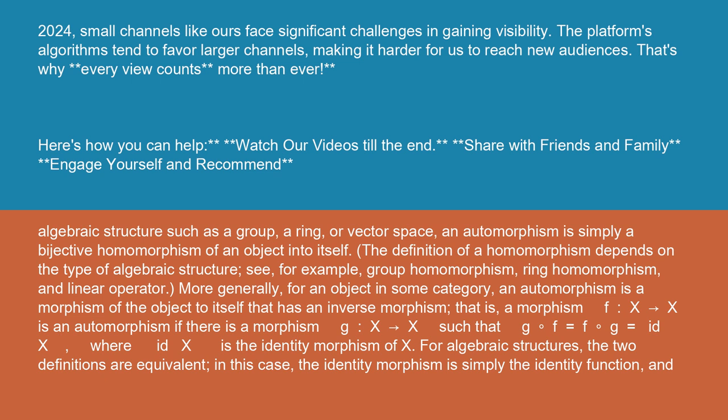More generally, for an object in some category, an automorphism is a morphism of the object to itself that has an inverse morphism. That is, a morphism F: X→X is an automorphism if there is a morphism G: X→X such that G∘F = F∘G = id_X, where id_X is the identity morphism of X.